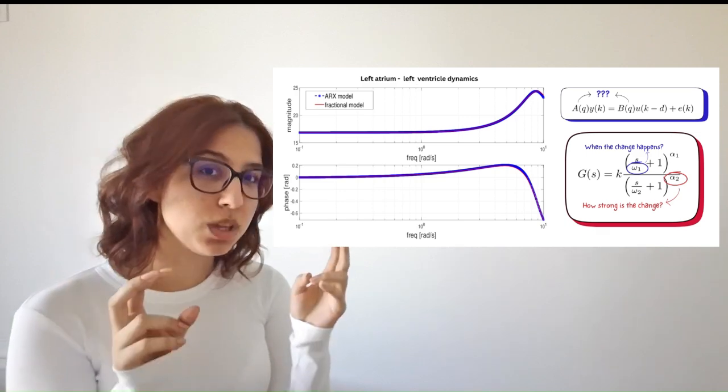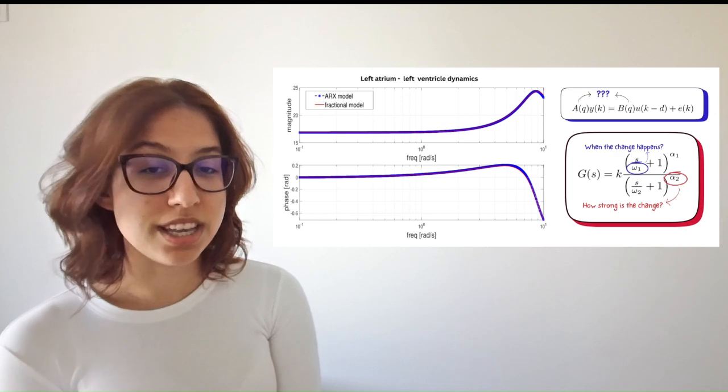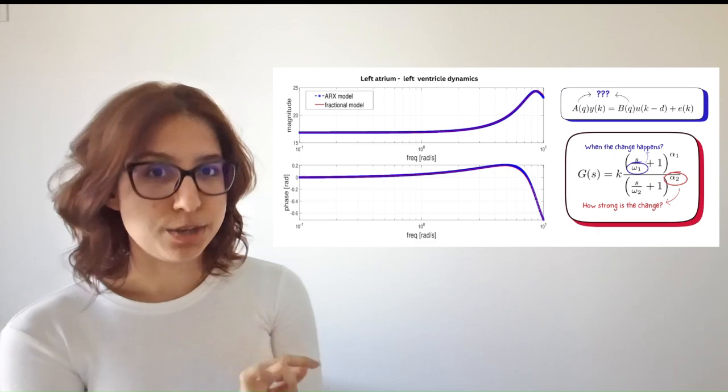The Bode plot illustrates how the heart's equalizer works. It shows how much each frequency is amplified or suppressed as blood flows between compartments.